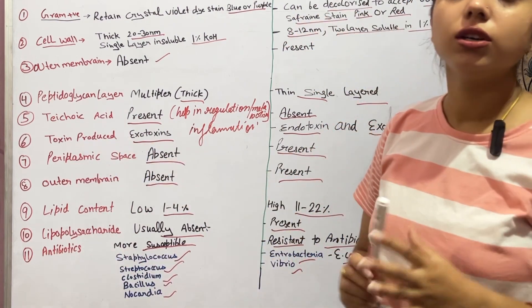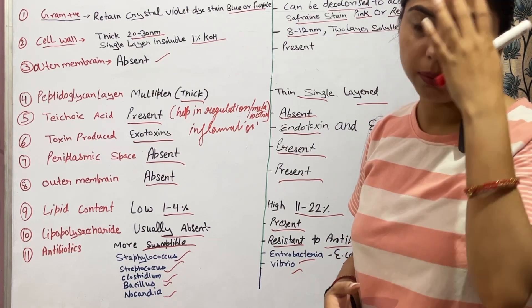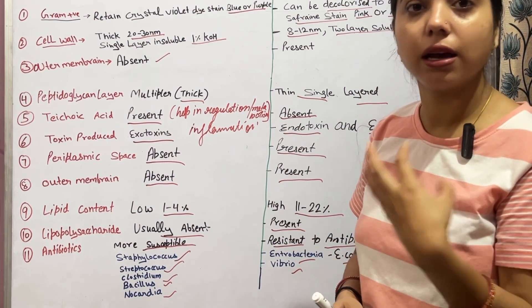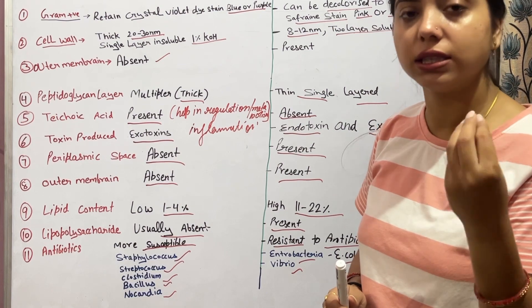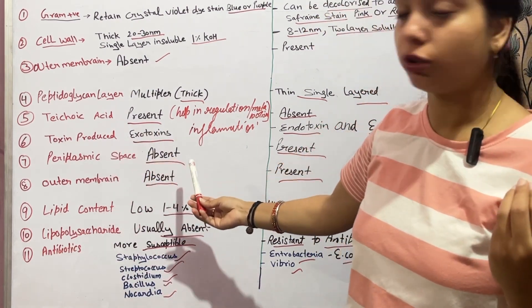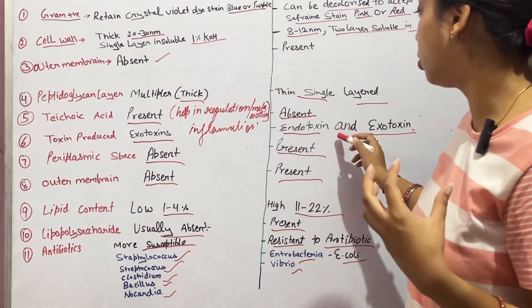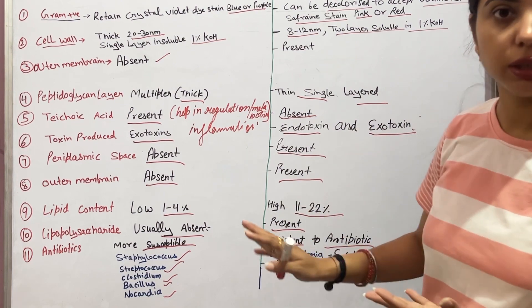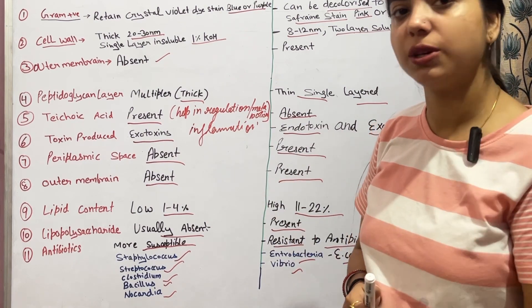Now let's talk about toxins. Bacteria can release toxins that cause disease in the host. The toxin produced by gram positive bacteria is exotoxin, while gram negative bacteria produce endotoxin. Both exotoxin and endotoxin can produce inflammation, which causes disease in the patient.